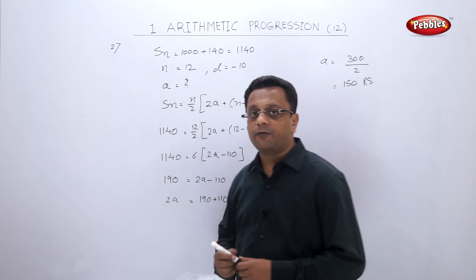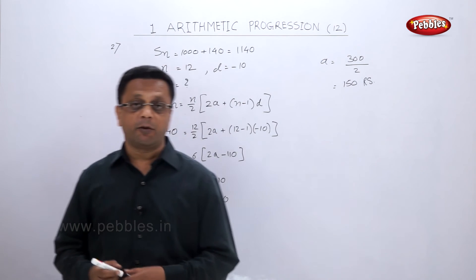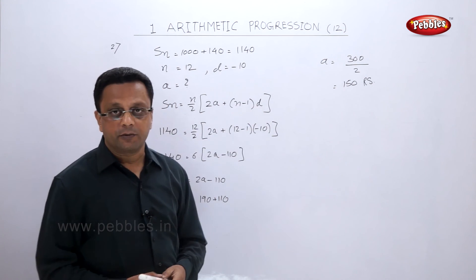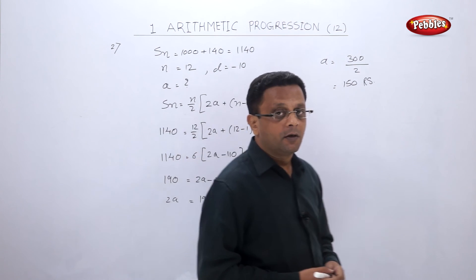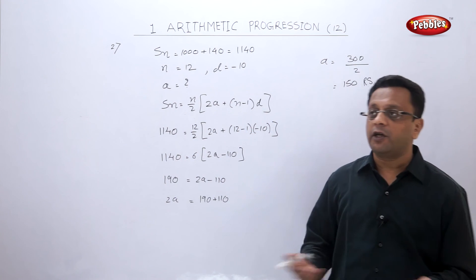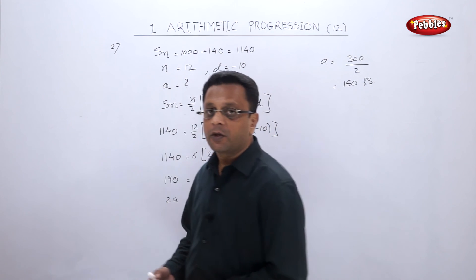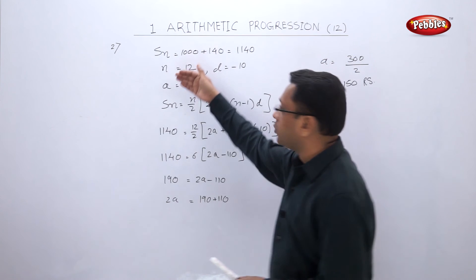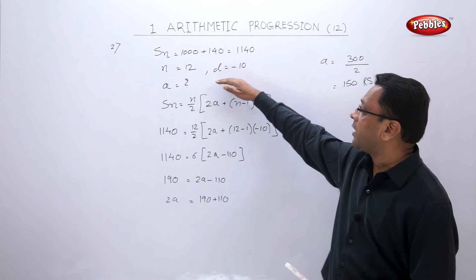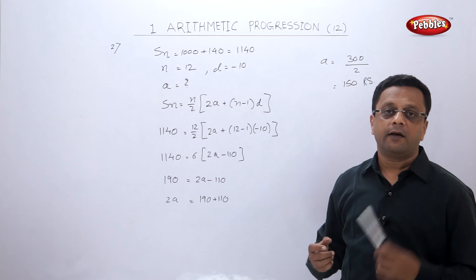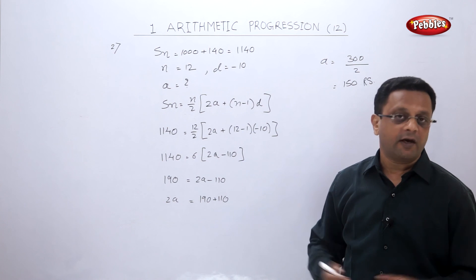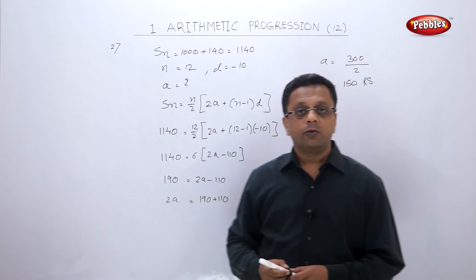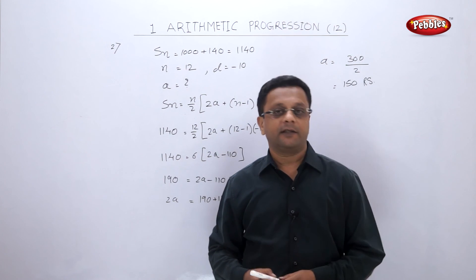These are the types of word problems that may be asked in the exam on the chapter arithmetic progression. The examples are straightforward — we have only two formulas, one for TN and one for SN. From the given information, we write what we know, substitute into the formula, and find the missing value. Now let us move to exercise 1.6.